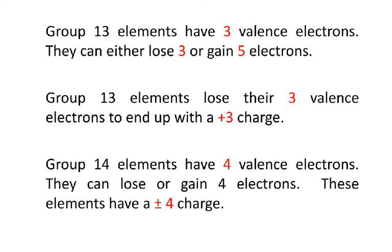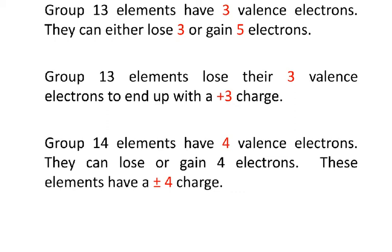Next, we're going into the group thirteen elements. They have three valence electrons — they can either lose three or gain five. It's easier to lose three, so they're going to lose those three valence electrons and end up with a plus three charge. Above group thirteen on your periodic tables, put a plus three. Group fourteen elements have four valence electrons, so they can either lose or gain four. They're kind of the wishy-washy ones of the periodic table. Carbon and silicon usually form covalent bonds rather than ionic bonds, but when they do form ionic bonds, they can lose or gain those four electrons.